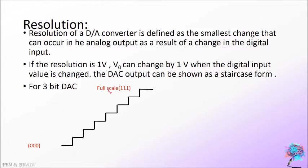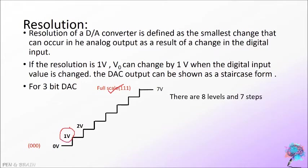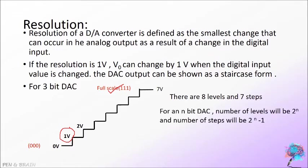Here the full scale voltage corresponds to input 111, that is 7 volt. We have represented the analog output for each digital input, and each level differs by 1 volt. There are 8 levels and 7 steps. In general, for an N-bit DAC, the number of levels is 2 raised to N and the number of steps is 2 raised to N minus 1. For N equal to 3, we get 8 levels and 7 steps.